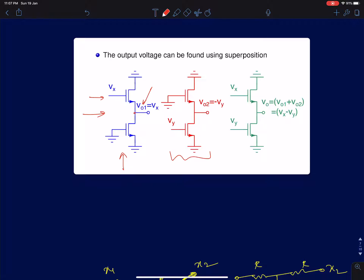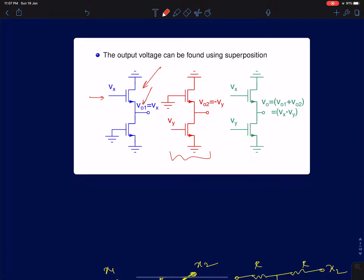For the common drain configuration, look at what the load impedance is. Looking down, the load impedance is infinity because R_naught is infinity. The lower MOS device acts like a current source — its gate is at AC ground, so Vgs = 0, meaning there is no gm·Vgs current component. The only thing it has is R_naught, which is infinity, making it an open circuit load. With R_naught infinity for the upper device as well, the small signal current cannot change, so Vgs must equal 0 and the gain is exactly 1: V_01 = Vx.